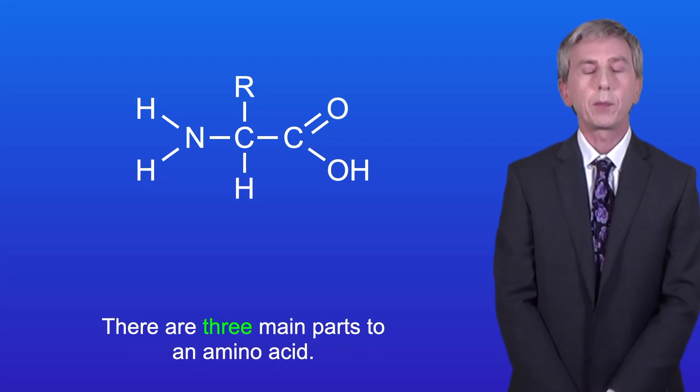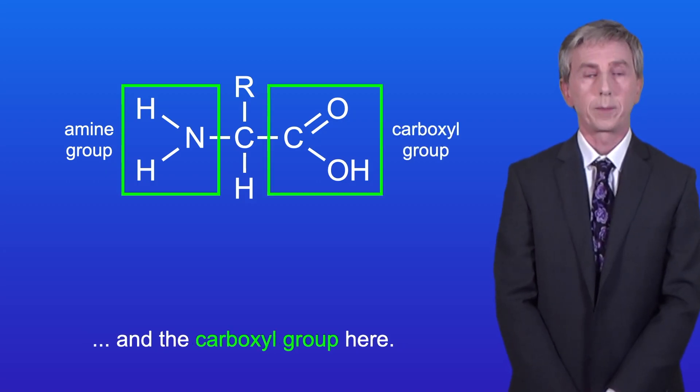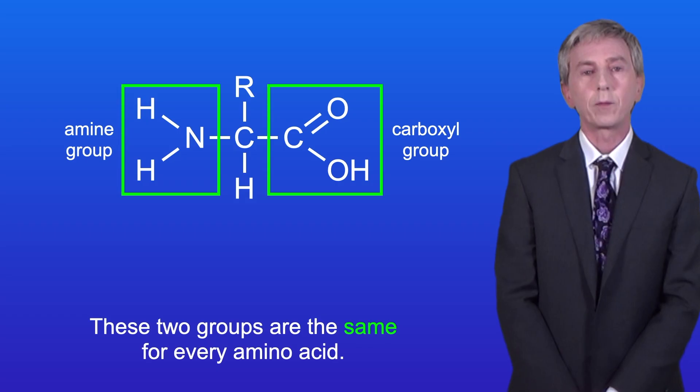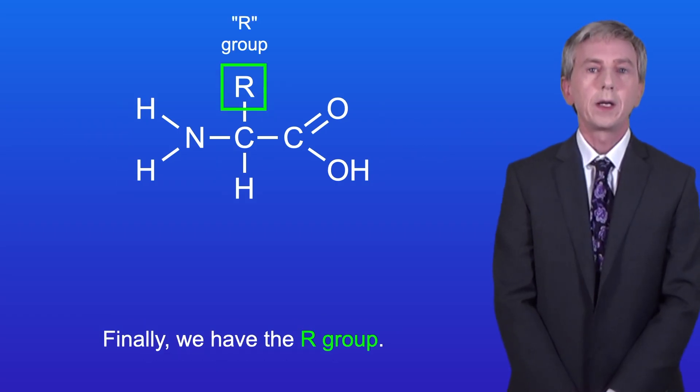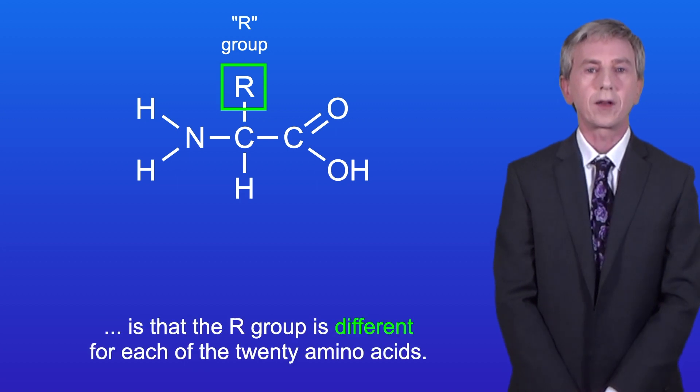Now there are three main parts to an amino acid. We've got the amine group here, and the carboxyl group here. These two groups are the same for every amino acid. And finally we've got the R group. Now the key idea you need to understand is that the R group is different for each of the 20 amino acids.